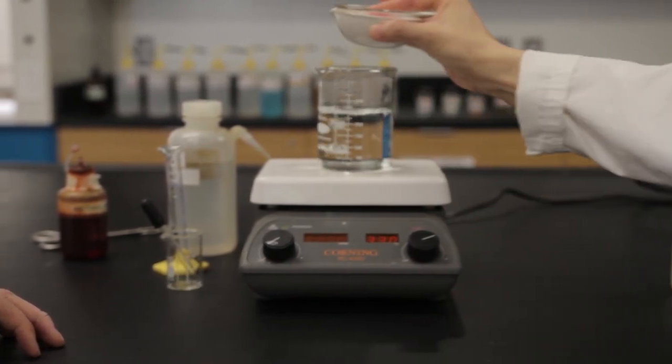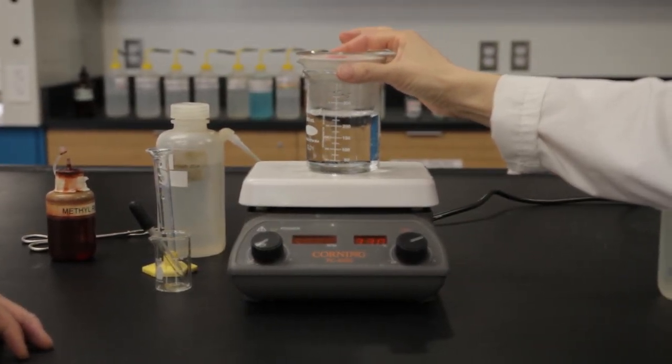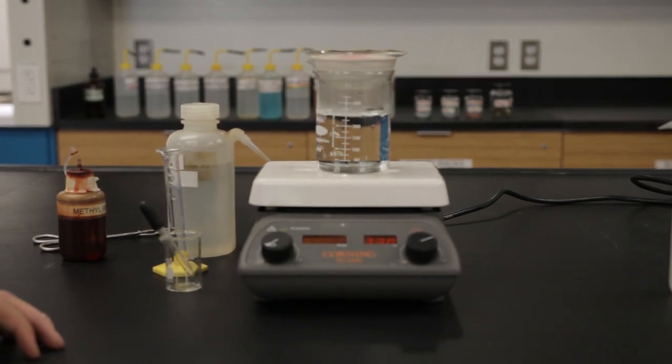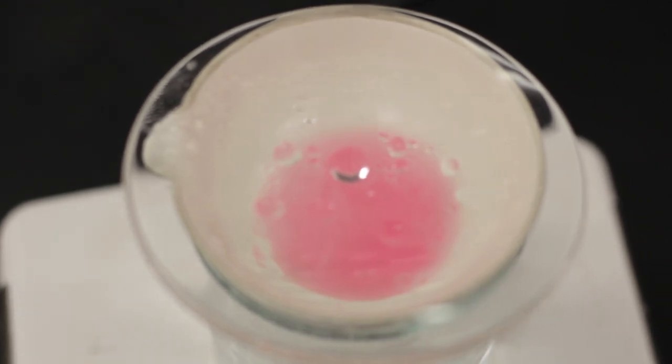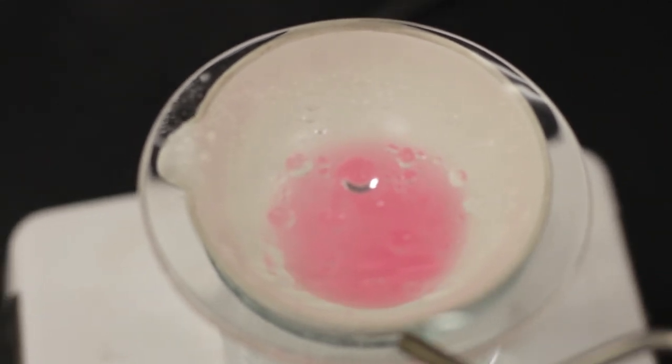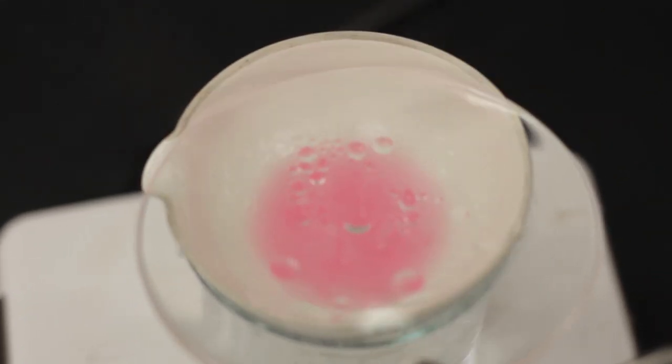Place the evaporating dish on the hot bath to heat the solution. Heat for approximately five minutes after the solution has warmed up. As the solution is heated, if the solution turns yellow, add more hydrochloric acid until the pink color returns.